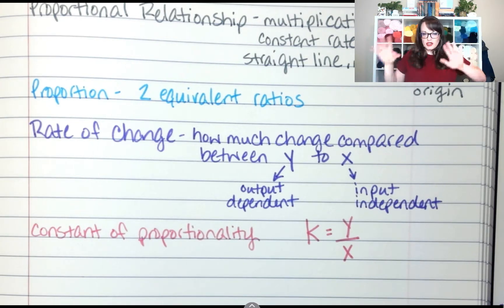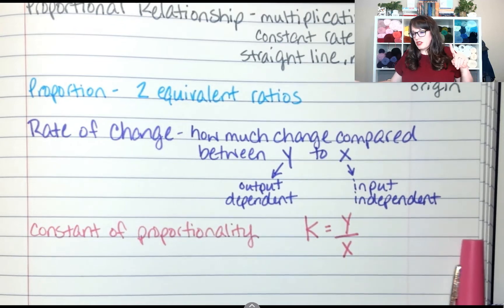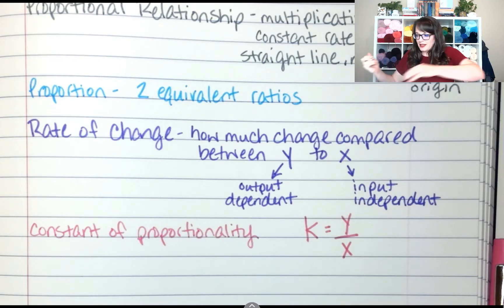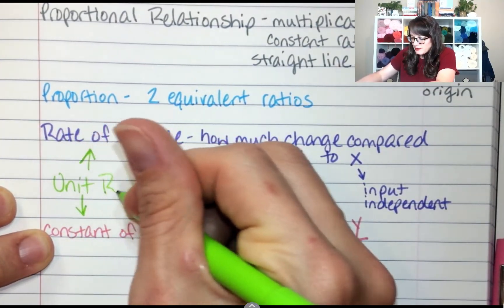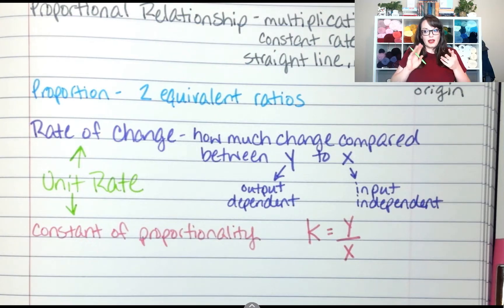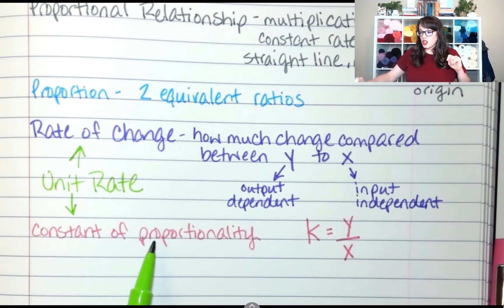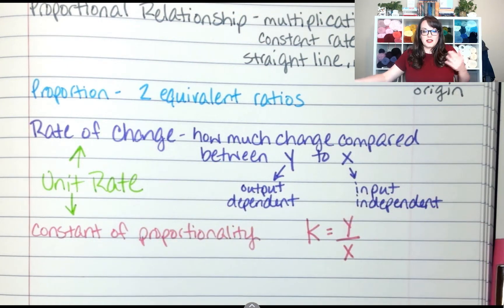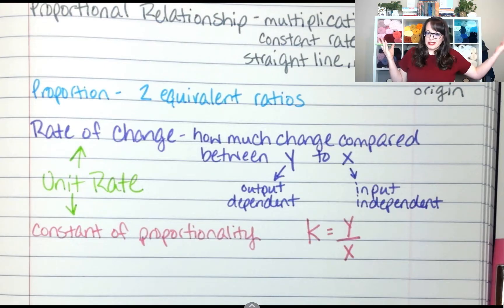So here's where these two lessons or last lesson this lesson kind of merge together. Constant rate of change and constant of proportionality are both just unit rate. So this and this are both unit rate. And remember with unit rate we found the ratio of our two things and we found the denominator of one or divided to find out how much one thing is. Constant of proportionality is that division. Rate of change is that division. So all three of these things are just unit rate which was what we did last time which is just dividing.